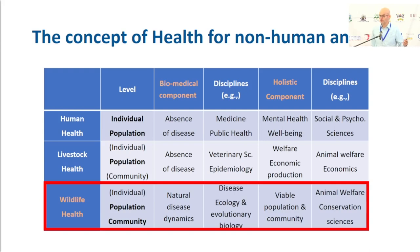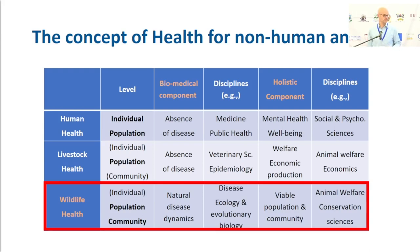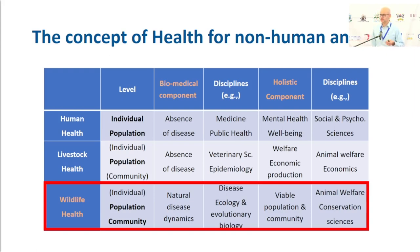Applying the biomedical component to free-roaming wildlife: you don't want to eradicate all disease from wildlife, because wildlife interact with pathogens and disease strongly influences the regulation of wildlife populations — much as predation does. There are natural disease dynamics you don't want to interfere with, leading to disciplines such as disease ecology and evolutionary biology. Applying the holistic component leads to thinking about viable wildlife populations and communities, animal welfare, conservation science, and wildlife management sciences.